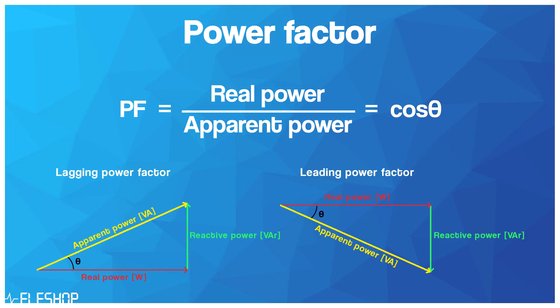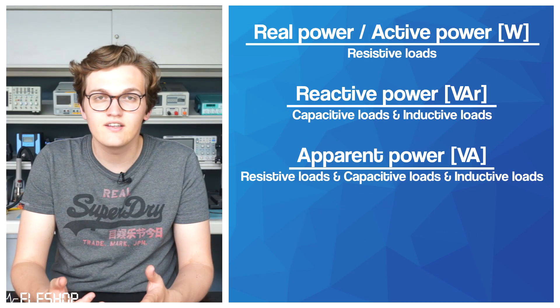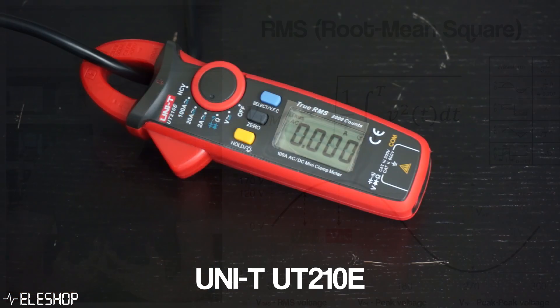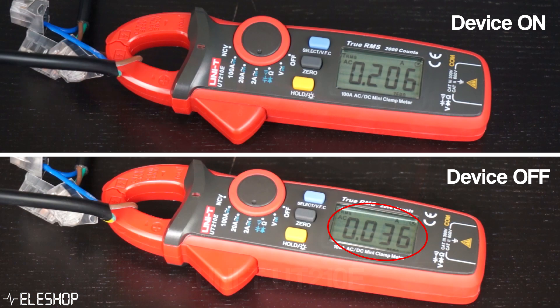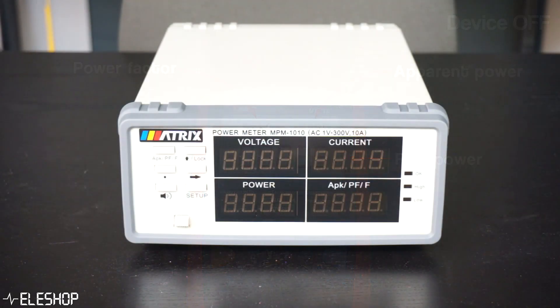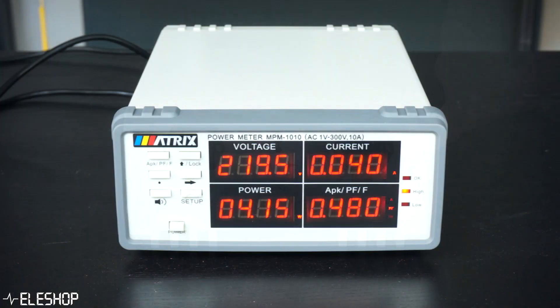In a previous video I've talked about the effects of standby power consumption on your energy bills and I've explained several concepts like the power factor and the difference between active, reactive and apparent power, so you can understand what you're actually measuring. Furthermore, I've shown you several methods on how to measure the standby power consumption of devices. The methods that were discussed in the video were with a current clamp, a true RMS multimeter and a power meter.